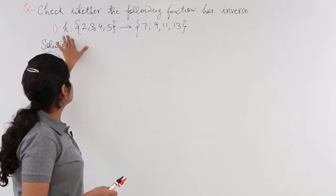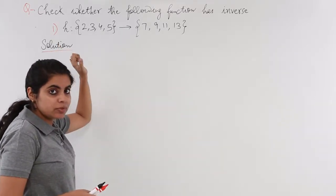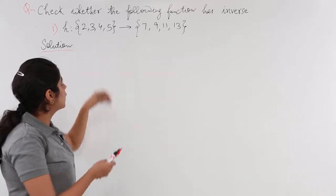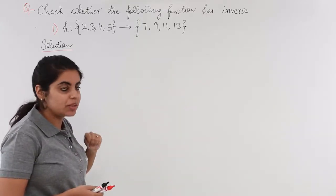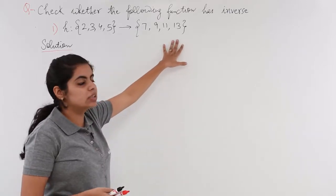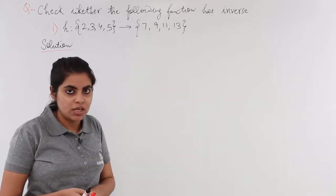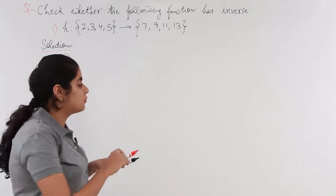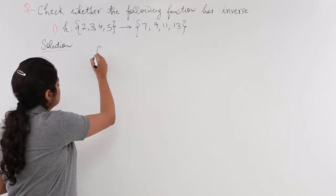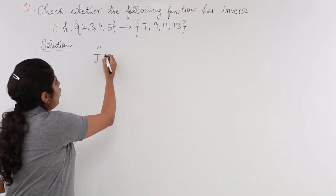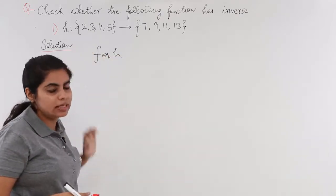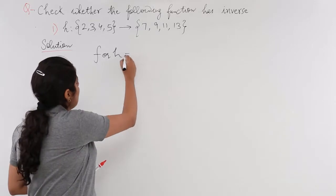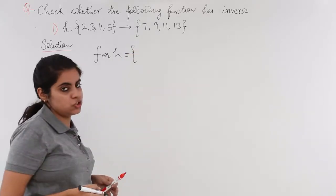So the function name is given as H and we have 2, 3, 4, 5 - four elements in the domain and 7, 9, 11, 13 on the right-hand side. So I can form a function from this information as F or you can say H only, it would be better because H is given in the question, so let's write H as an ordered pair relationship.